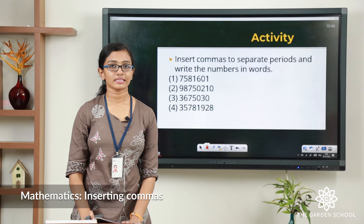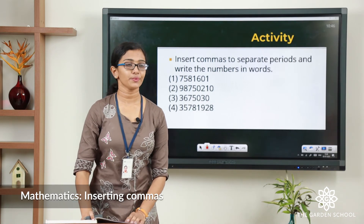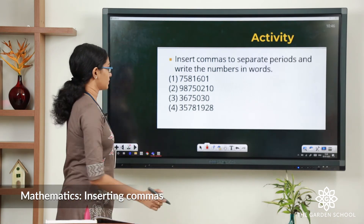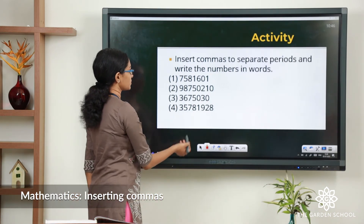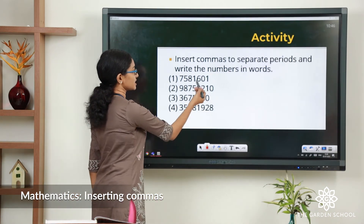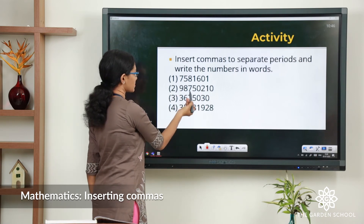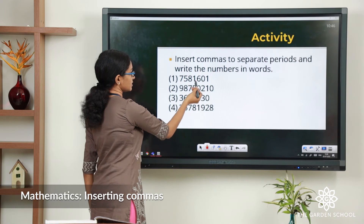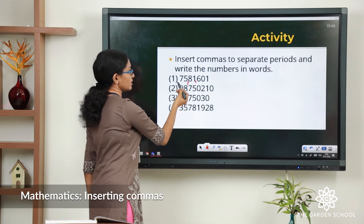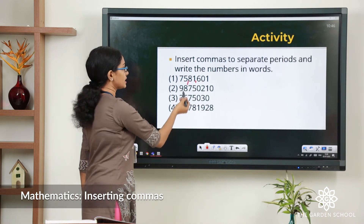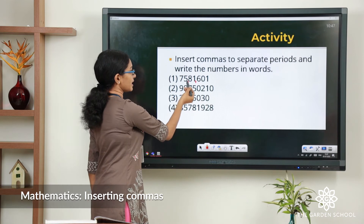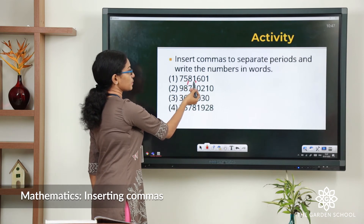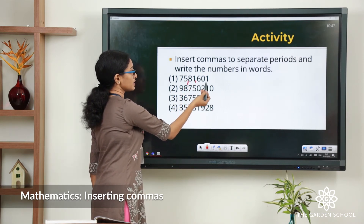Hope you have finished that one. Now let us see the answers. For the first question, let us insert commas: ones, tens, hundreds — comma here — thousands, ten thousands — comma here. This number in words will be 75 lakhs 81,601.